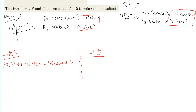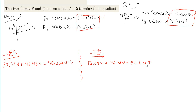Repeating the process for the Y direction, taking up as positive. The 13.68 newtons from the 40 is going upward, so it's a positive number. The 42.43 newtons from the 60 is also going upward, so also positive. That's all we have in the Y direction, so the total in our Y direction is 56.11 newtons, also positive, meaning the arrow direction is upward.